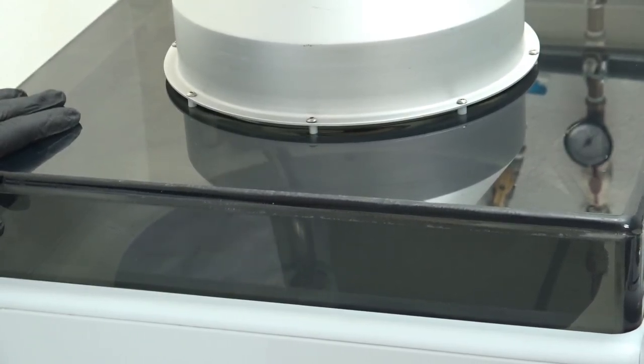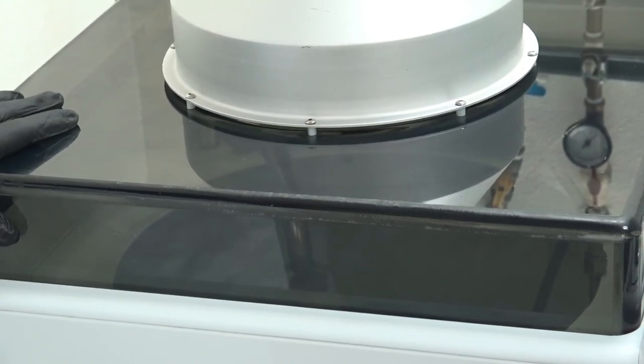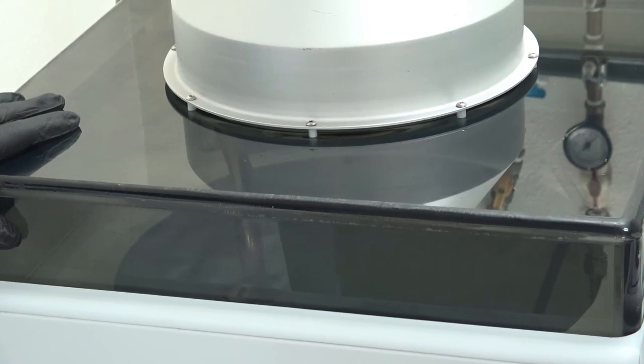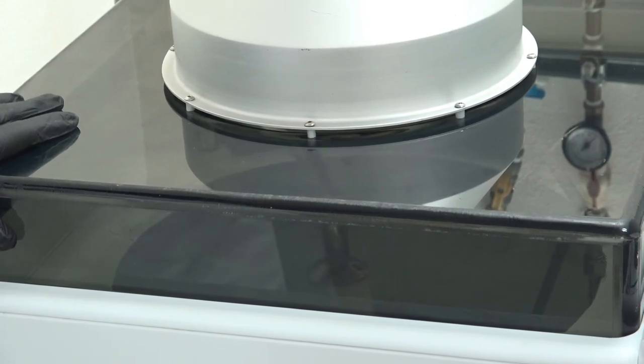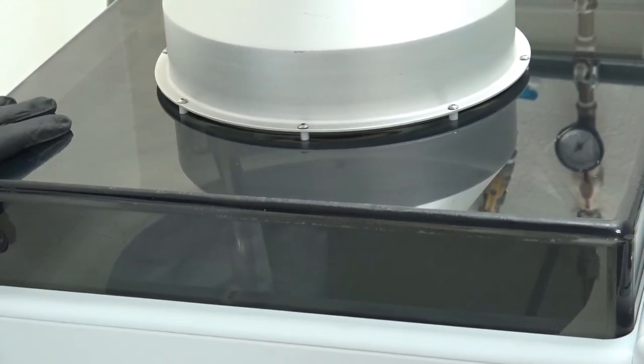We now have dispense number two. The arm is re-oscillating across the substrate surface, and the brush is spinning. This is a DI dispense that is going to then mix with the surfactant to create a solution for the brush scrub feature.